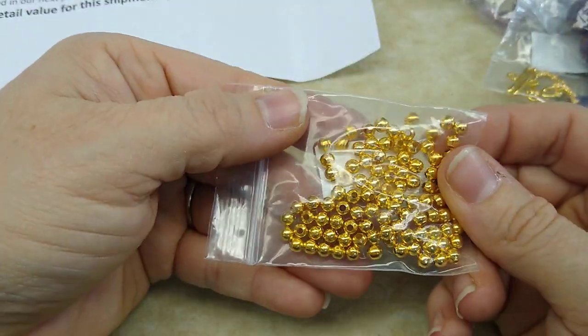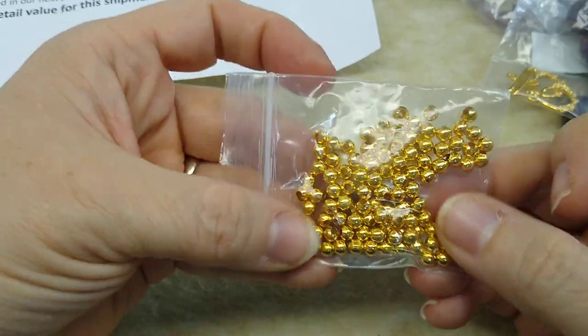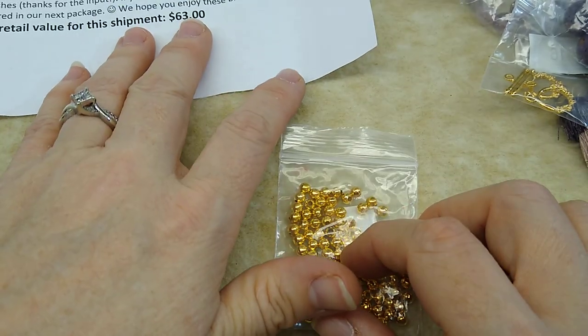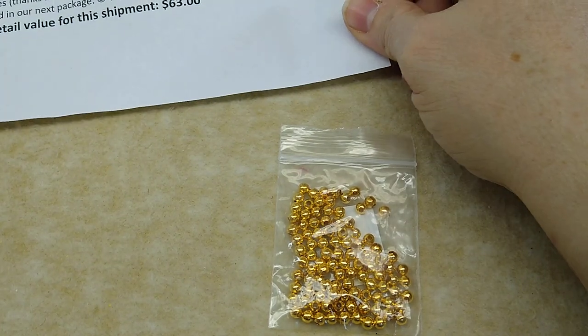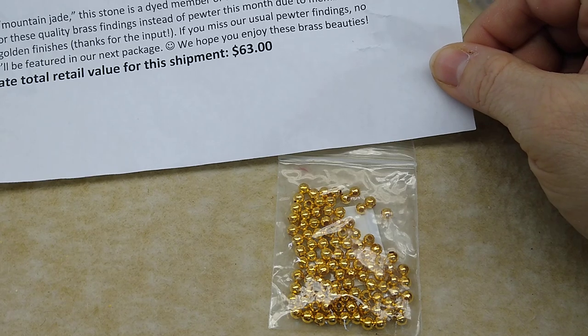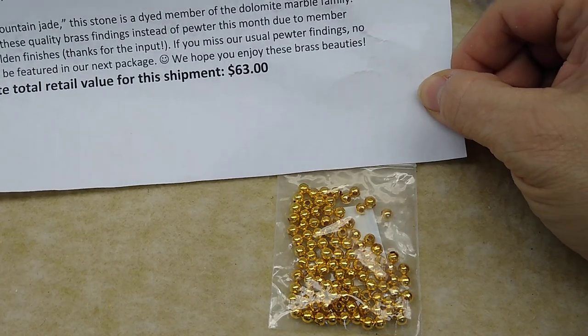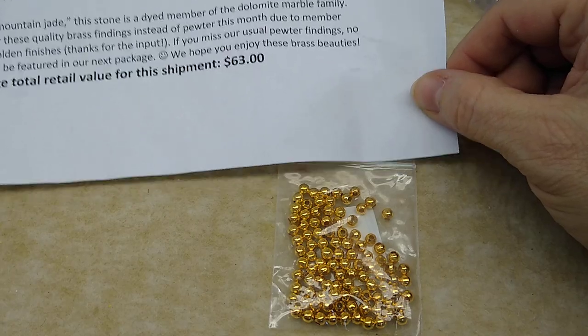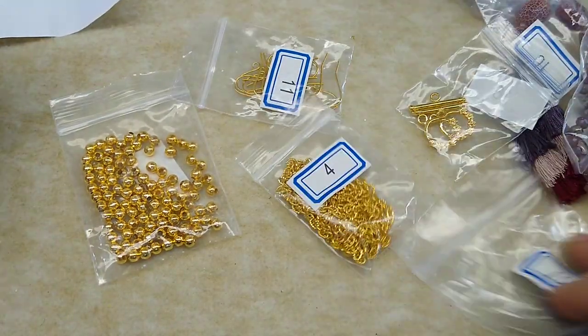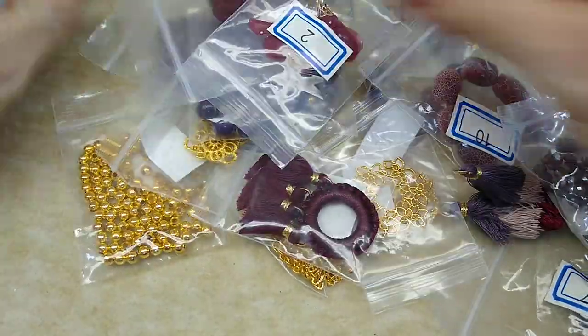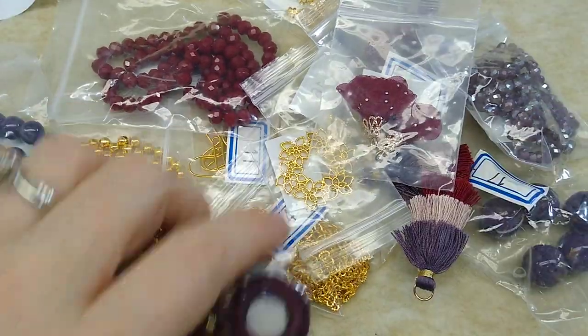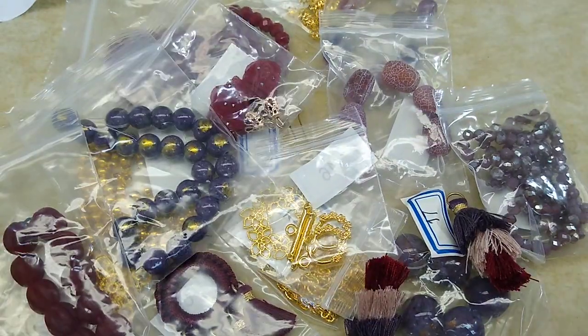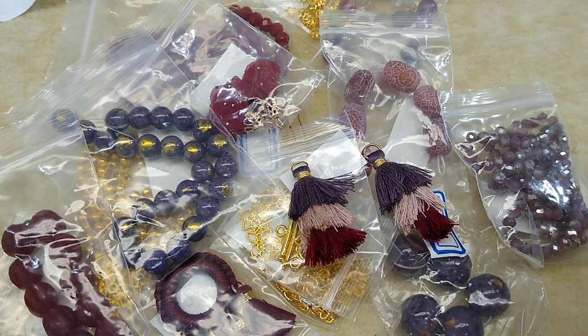Number five, a hundred pieces of four millimeter gold finished steel round spacer beads. And I'm not going to take these out because I'm having a dropsy day and I will drop them everywhere, but that's number five. So there are 18 items. It says a $63 value. And they did say we opted for these quality brass findings instead of pewter this month due to member feedback on golden finishes. Thanks for the input. If you miss our usual pewter findings, no worries. They'll be featured in our next package. We hope you enjoy these brass beauties. So I'm not sure what they mean by that. Apparently people were complaining about something. I don't know, but anyway, I don't see what there is to complain about. I mean, I am totally impressed with bargain bead box every month and look at this. I mean, look at the color scheme. This is absolutely stunningly beautiful this month.